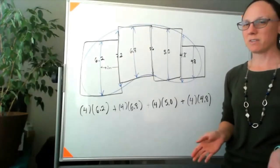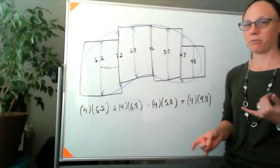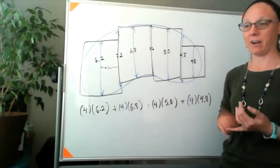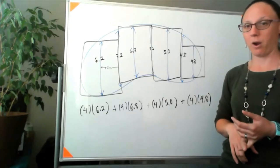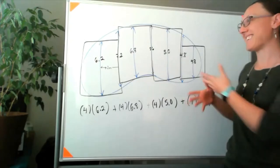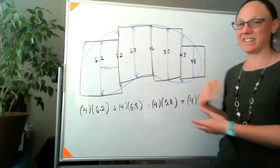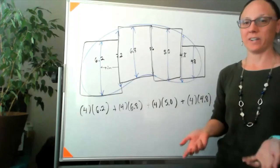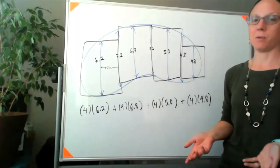I hope that was helpful — like for the leaf problem and the airplane wing problem. This is the idea of what you're being asked to do when it says to use the midpoint rule.